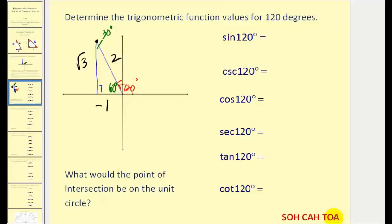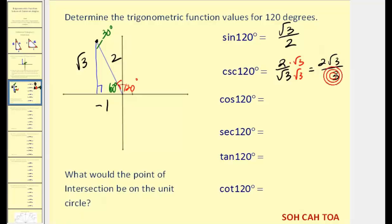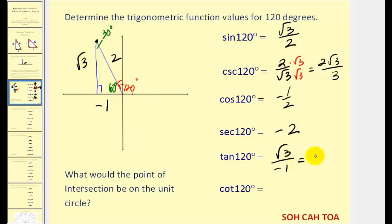Using SOHCAHTOA, the sine of 120 degrees is the ratio of the opposite side to the hypotenuse: square root of three over two. The cosine of 120 degrees is adjacent over hypotenuse: negative one-half. The tangent of 120 degrees is opposite over adjacent: square root of three divided by negative one, which equals negative square root of three.